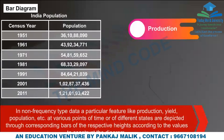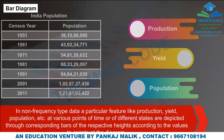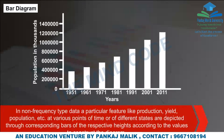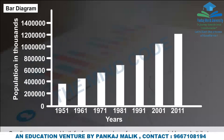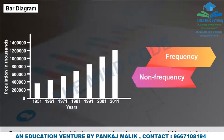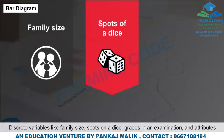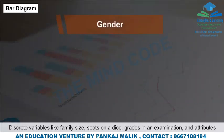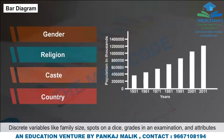Bar Diagram Data Types: The data for a bar diagram can be of frequency or non-frequency type. In non-frequency type, a particular feature like production, yield, or population at various points of time or different states is depicted through bars of respective heights. Bar diagrams are used for both frequency and non-frequency variables and attributes, including discrete variables like family size, grades in an examination, and attributes such as gender, religion, caste, and country.